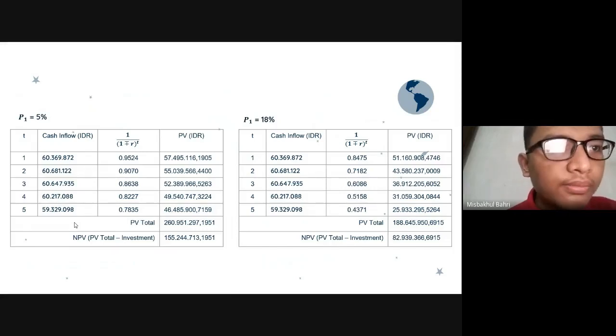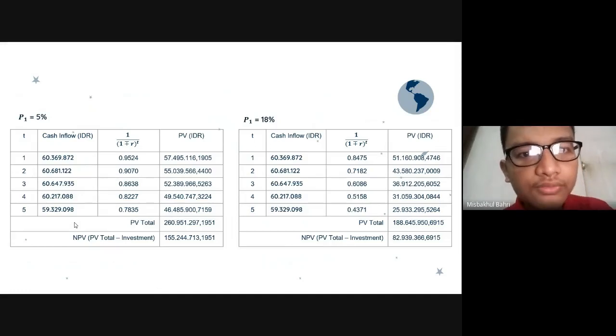For P2 equal to 18%, we get PV total equal to 188,645,950,695, and NPV equal to 82,639,366,915.